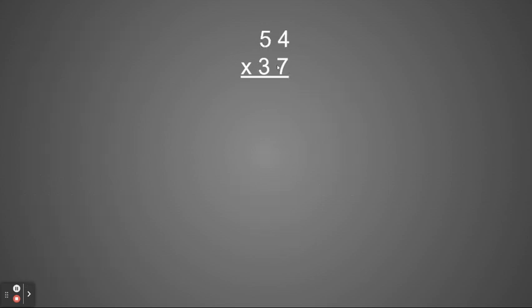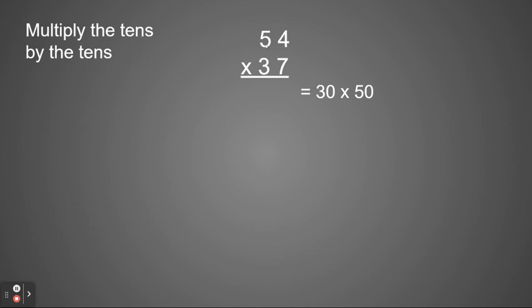54 times 37. Again, I'm going to multiply my bottom tens place through my top number starting in tens. So multiply my tens times tens. I have 30 times 50. 3 times 5 is 15. So 30 times 50 is 1,500.